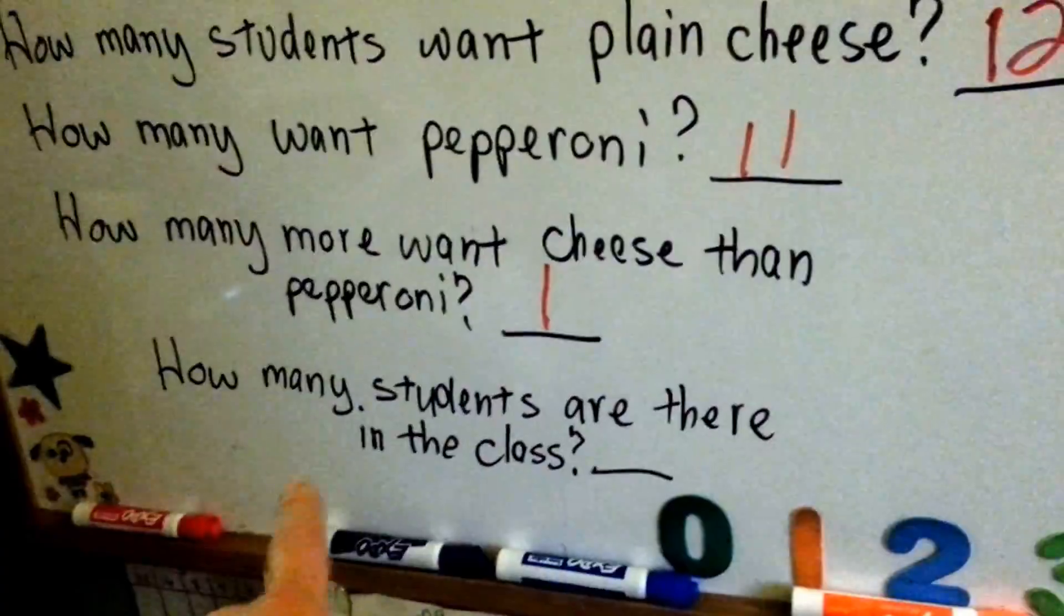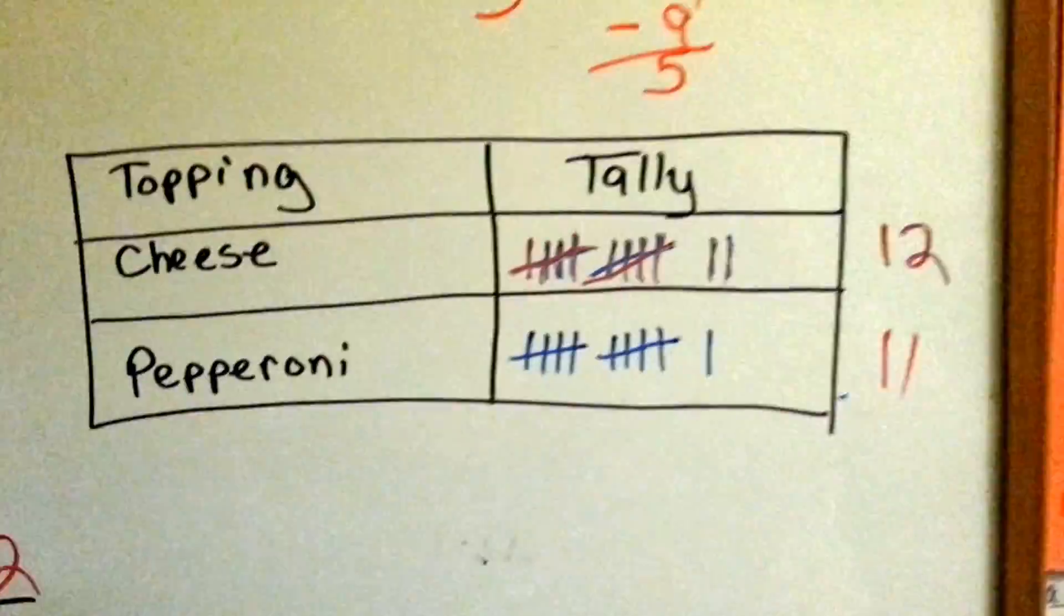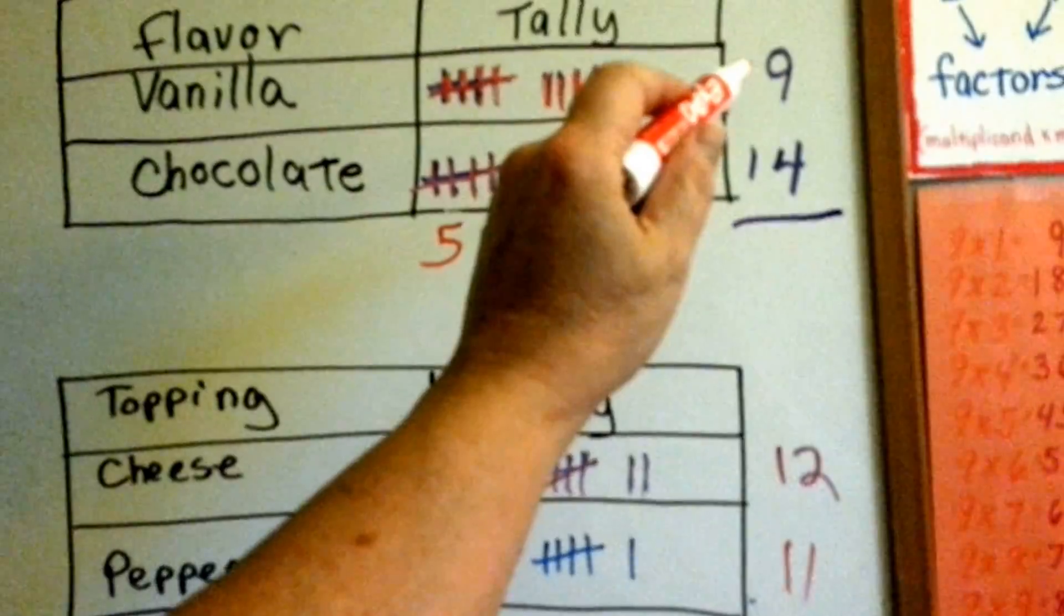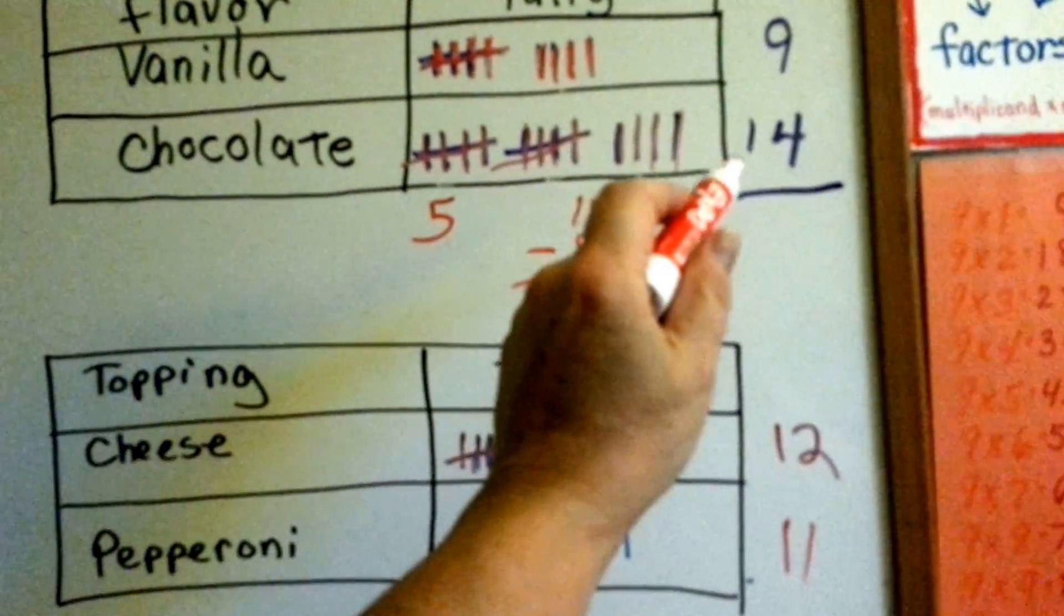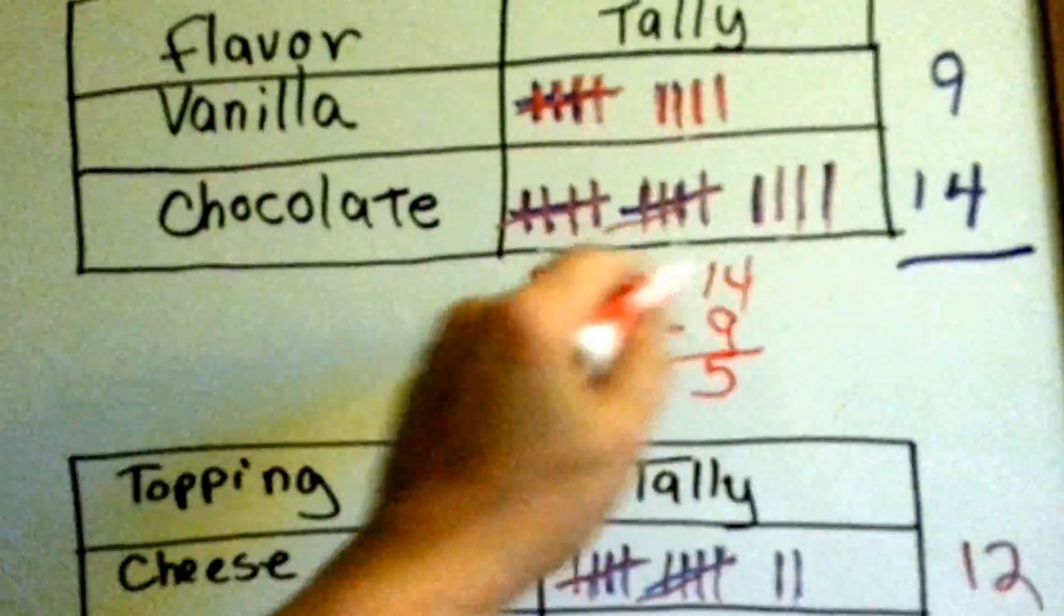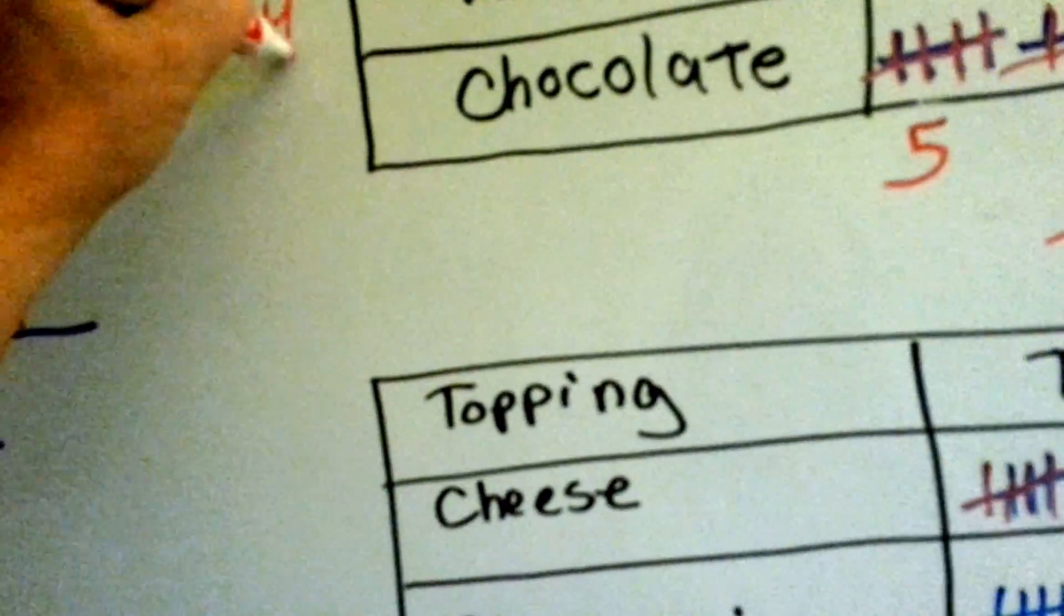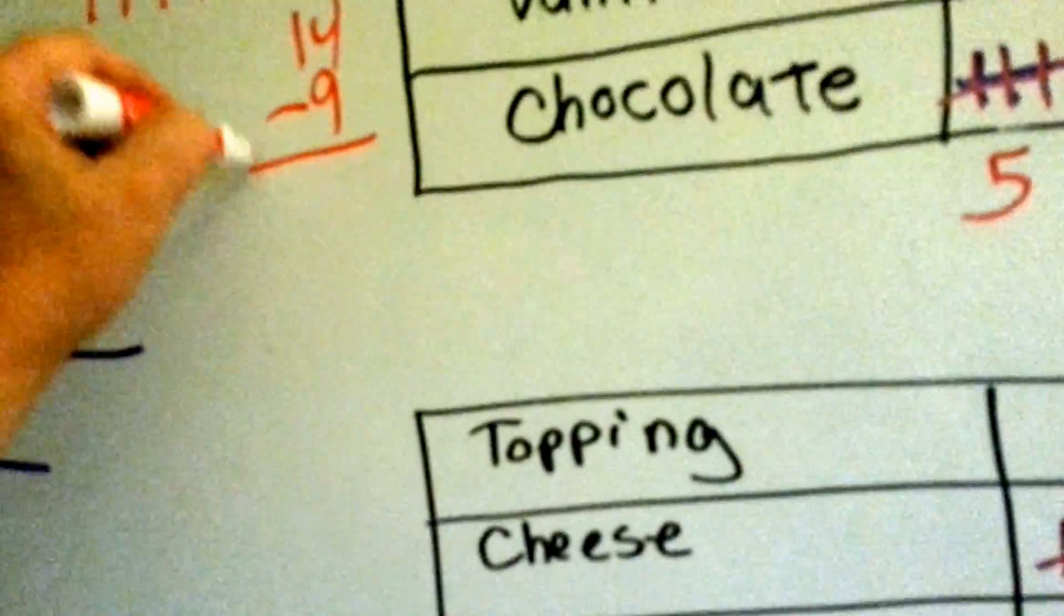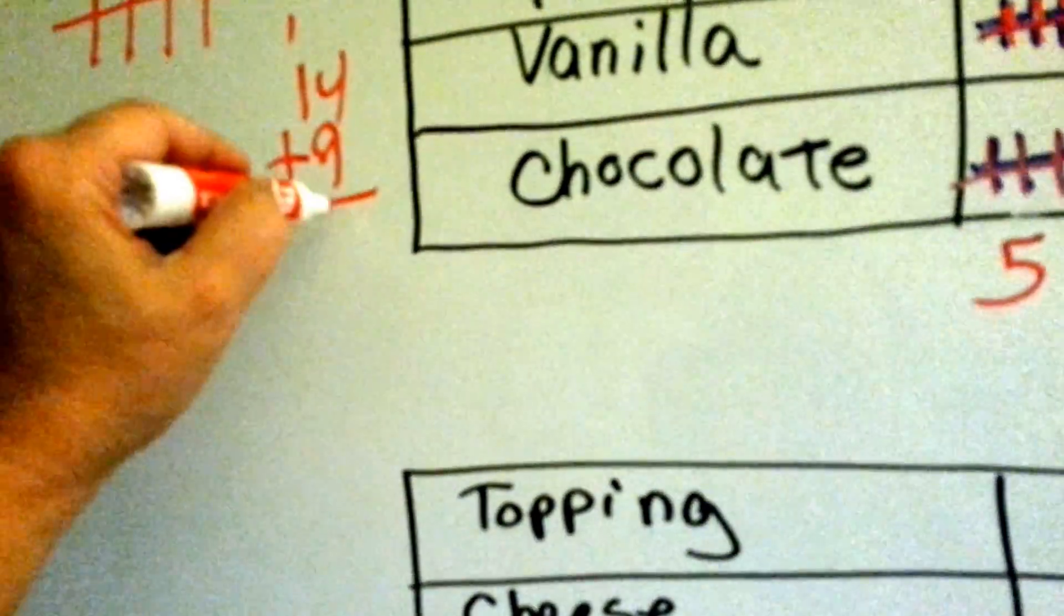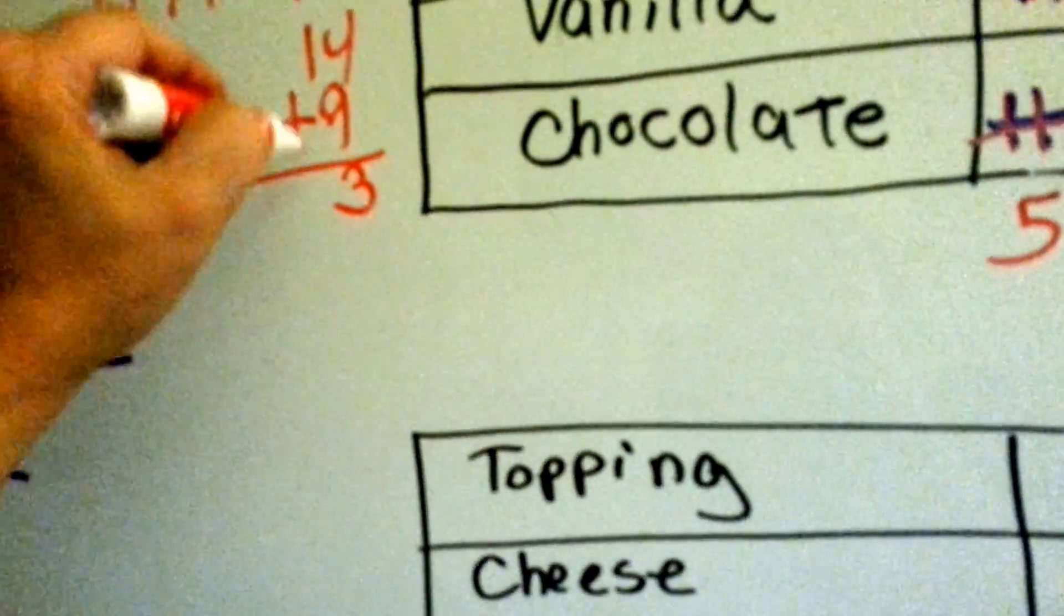How many students are there in the class? Well, in this tally table, there were 9 students voting for vanilla and 14 voting for chocolate. How many is that in all? What's 14 plus 9? 9 and 4 is 13, carry the 1. 1 and 1 is 2, 23.